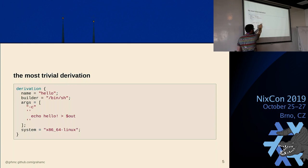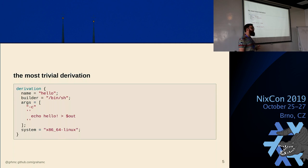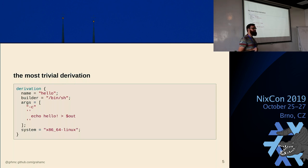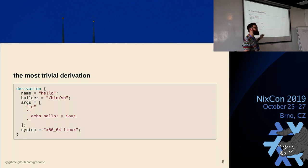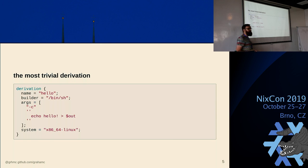When Nix builds a derivation, it sets certain environment variables in the process that it starts. A special one is `out`. Out is where you write your build results to. You can't write anywhere else permanently in the file system except where Nix expects your build products to go. There are a few advanced cases for build outputs like libraries and headers, but out will satisfy most needs.